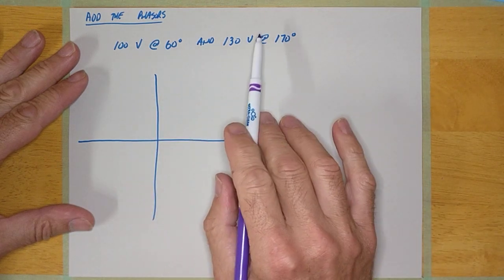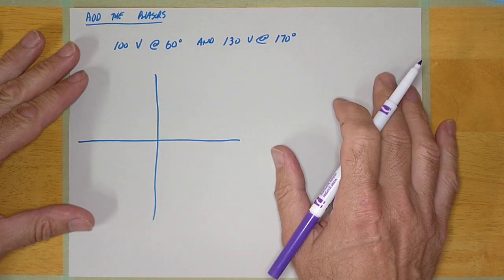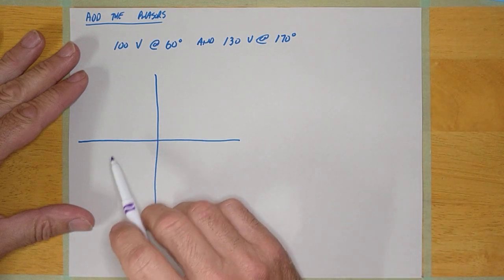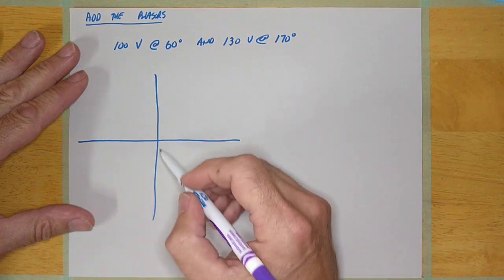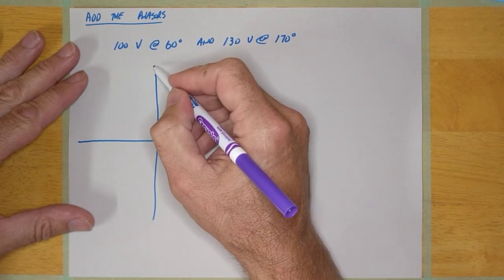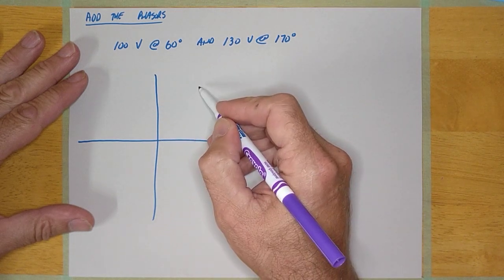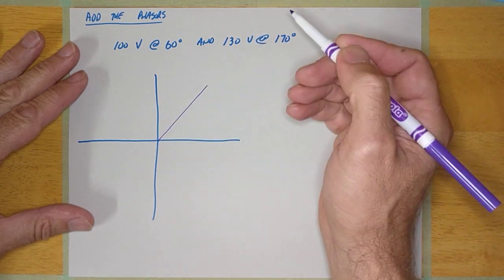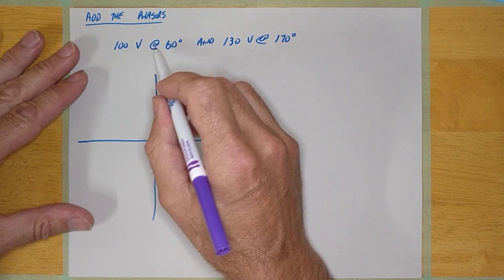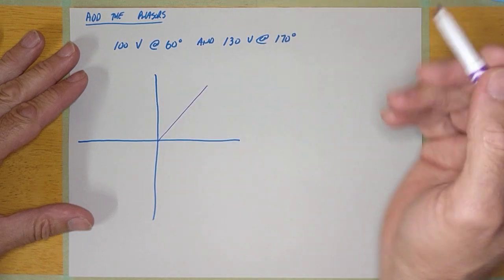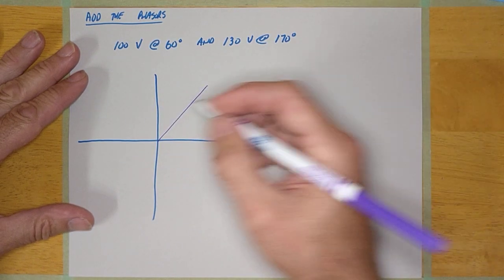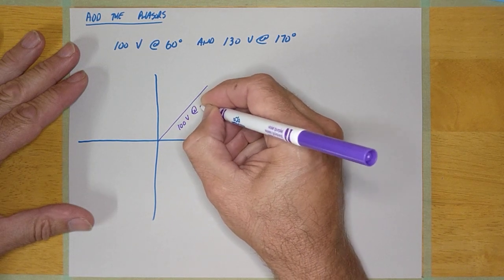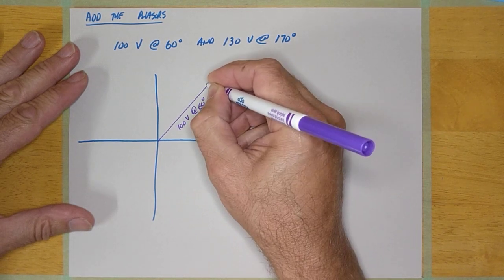So here's my two phasers and I'm going to draw them. Here's my little phaser world here. I've got 100 volts at 60 degrees. There's zero degrees, there's 90 degrees. So 60 degrees is right here. So I'm going to draw it. It doesn't matter which, I could draw this one first, but I usually draw the first one first and then the second one second. So there's my 100 volts at 60 degrees.